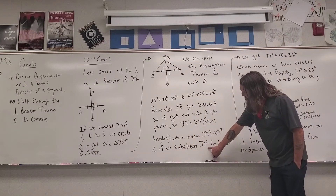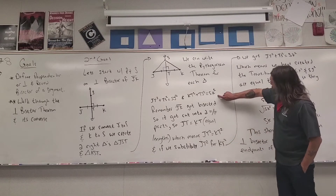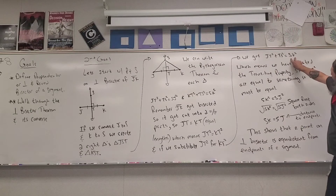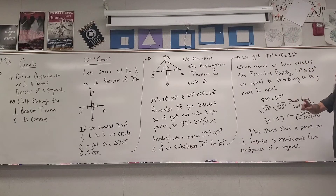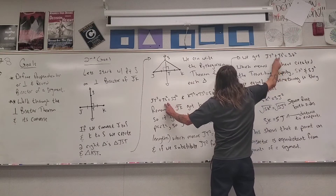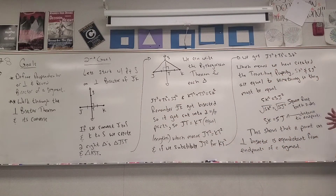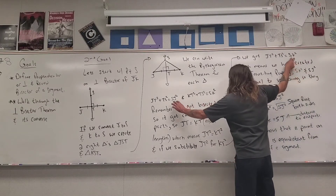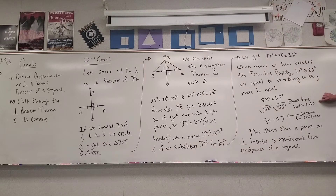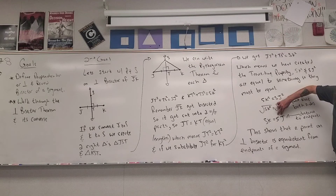Since JT² equals KT², I can substitute KT² in for JT² in the first equation. That gives us KT² + TS² = SK², which is the same as the second equation. Now SK² and SJ² are both equal to the same thing — that's the transitive property. So SK² equals SJ². Taking the square root of both sides, the length of SK equals the length of SJ.